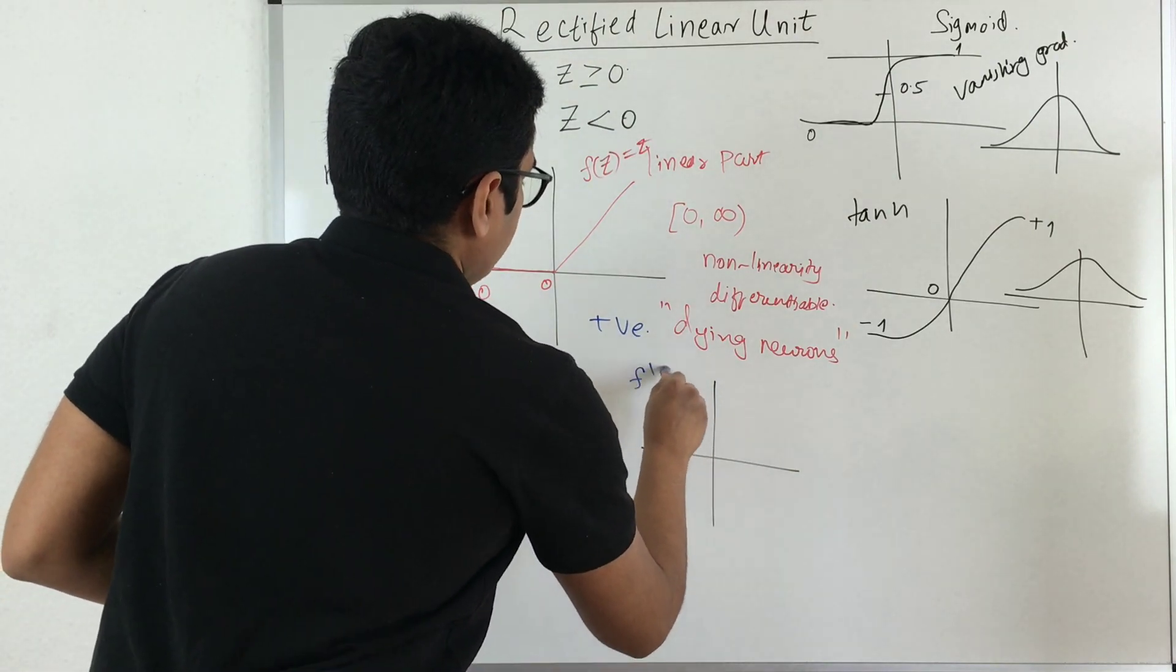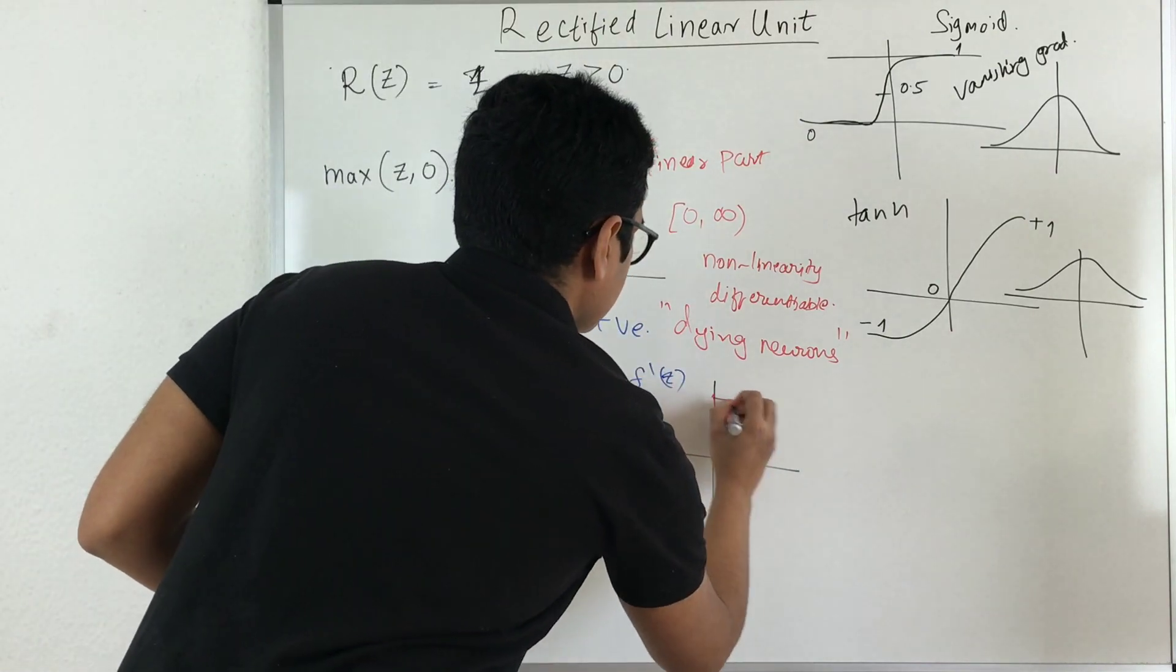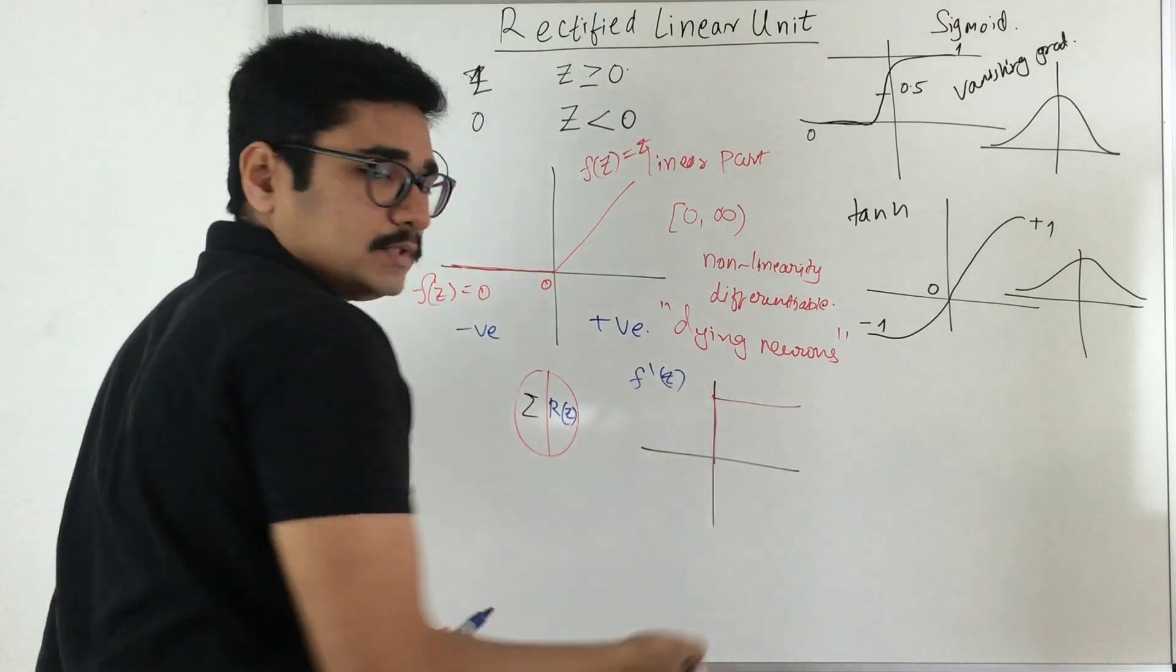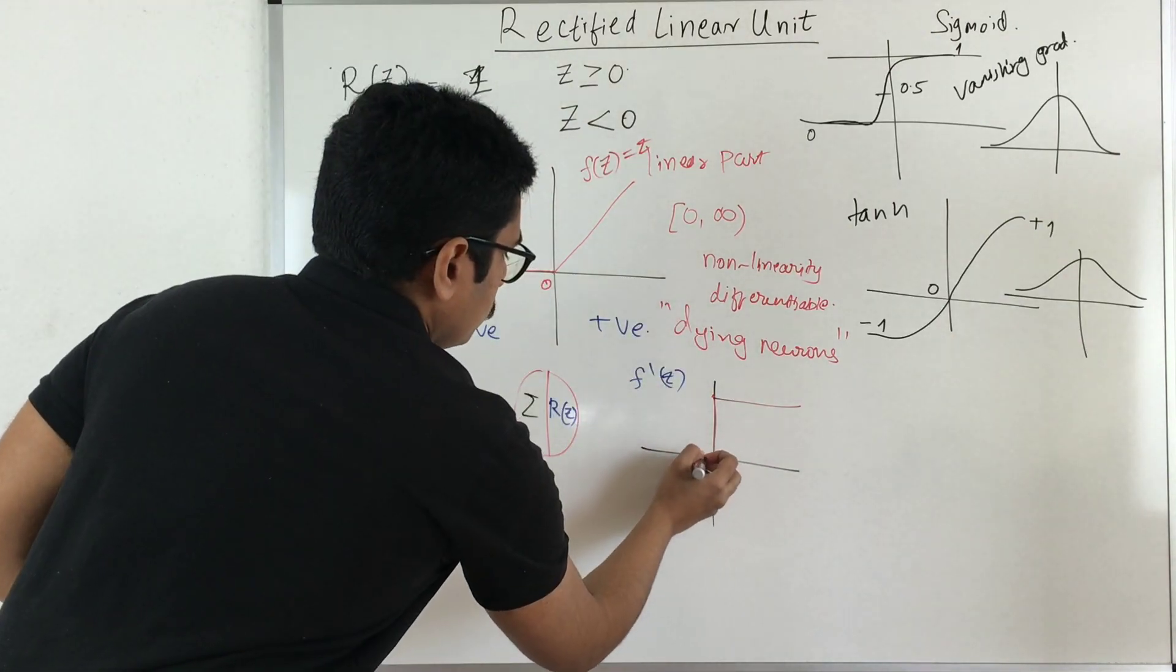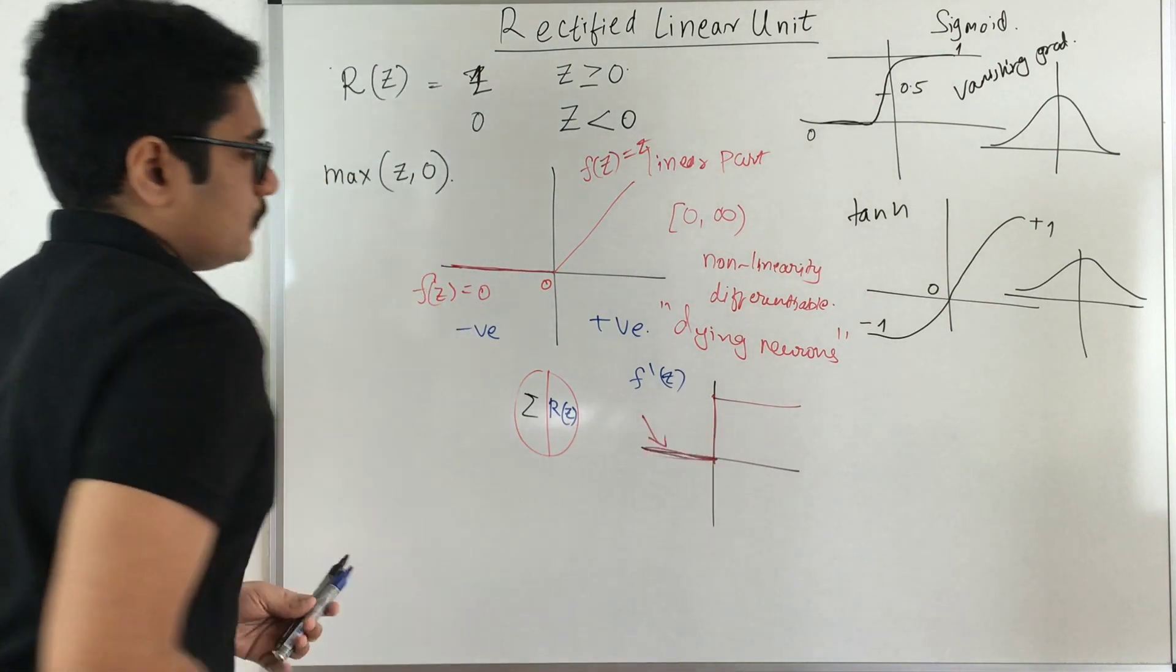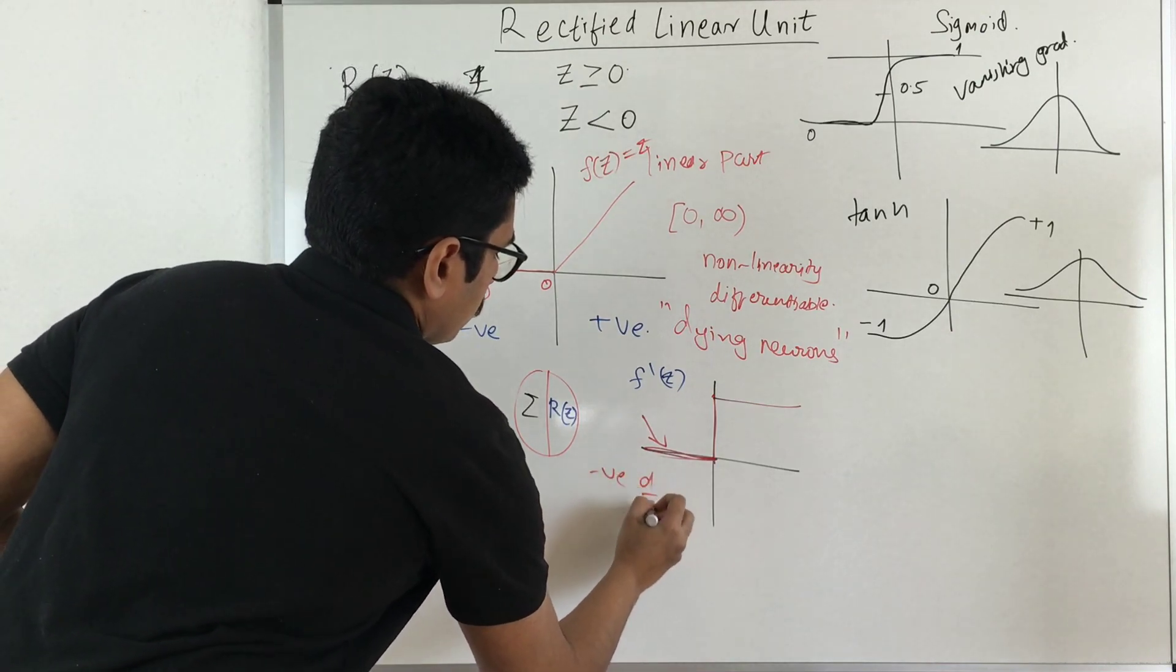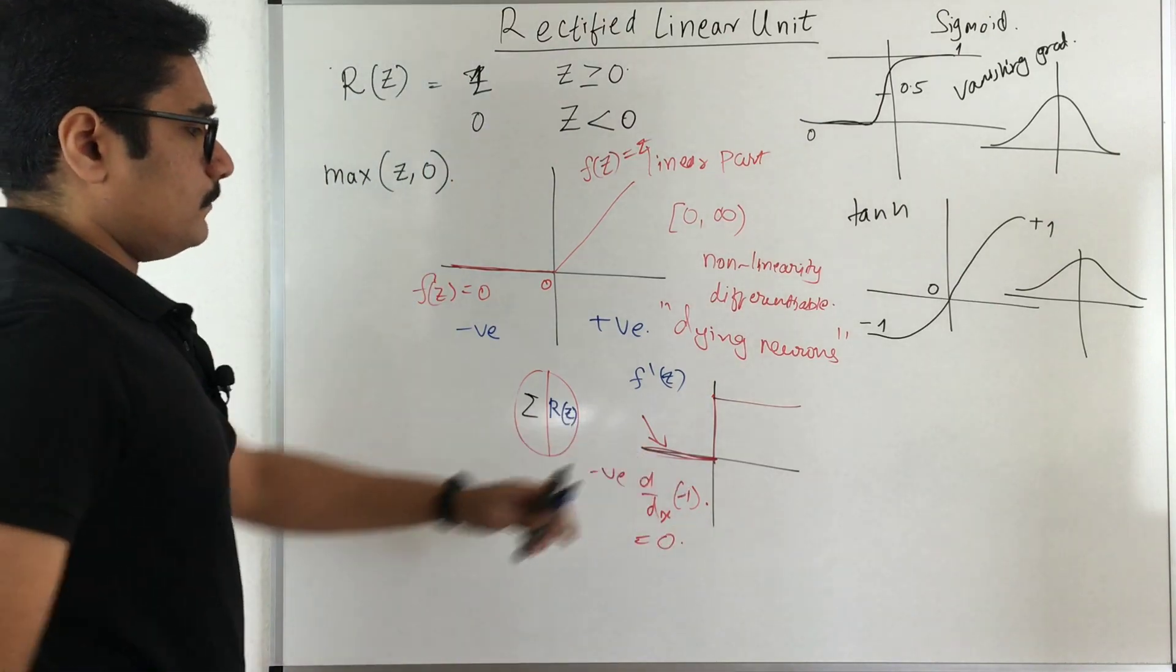So if you want to see the graph of this, if you want to differentiate this, so say we are taking f prime of z, so this graph becomes something like this. So that is steady. So that was also the case for step function, but in case of this negative values this attains a 0.